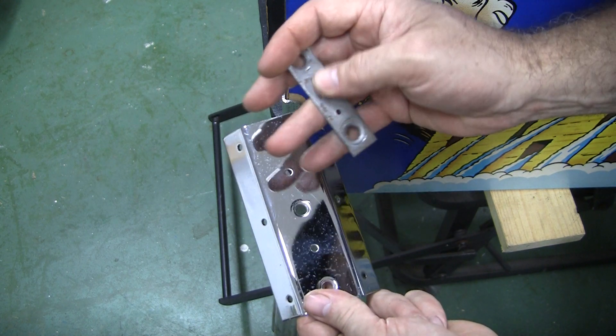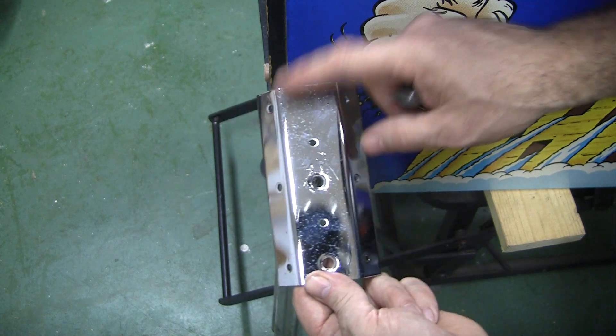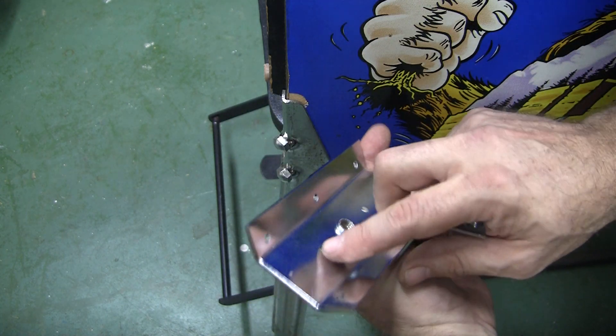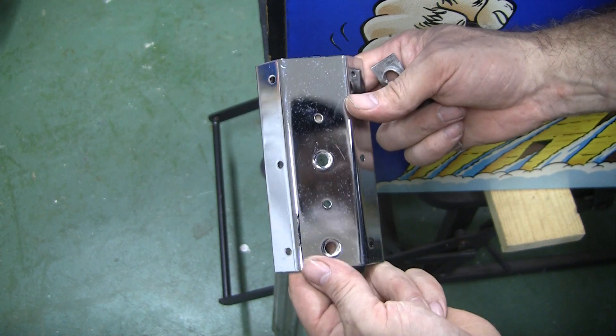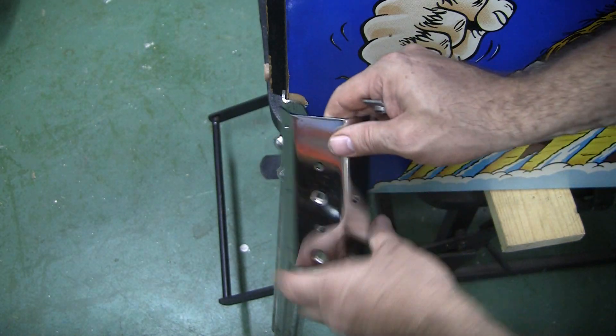And instead of two screws holding it on, you have six and you can screw in the ground braid or whatever you want. You can even screw in there too.